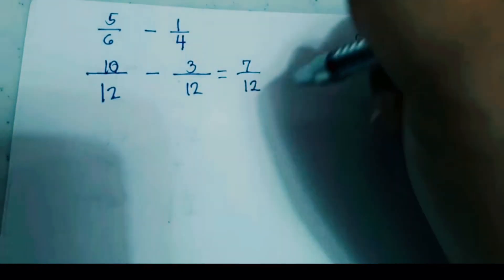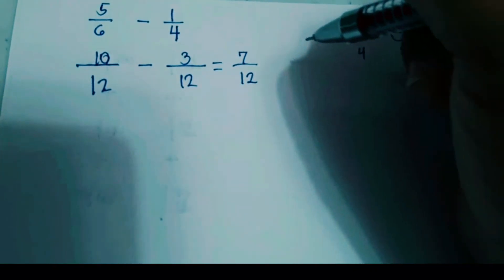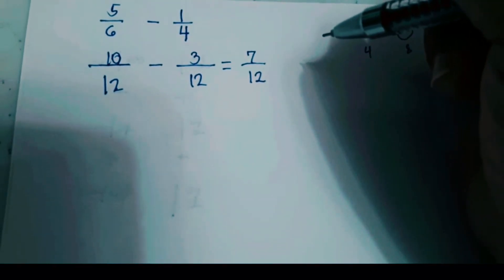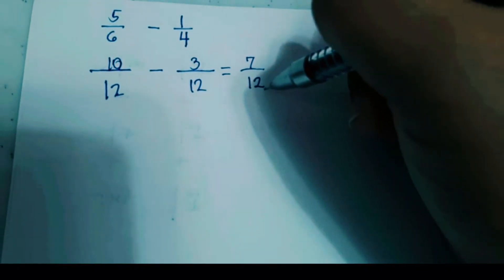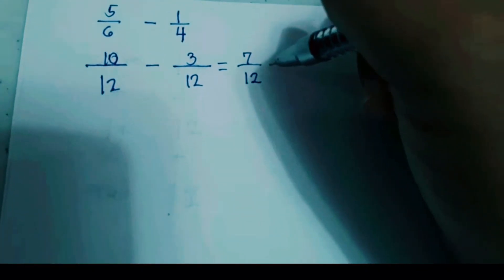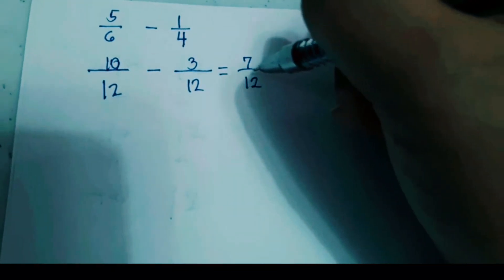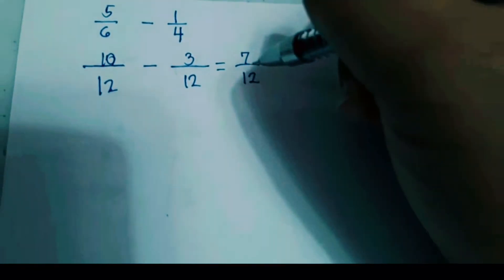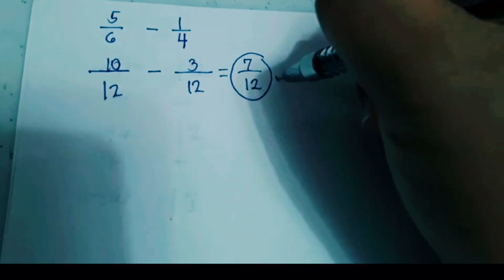Before finalizing your answer, examine the difference: 7 over 12. Is there a number that can divide both 7 and 12? If there is none, then 7/12 is your final answer.